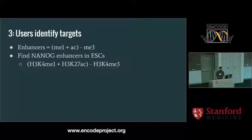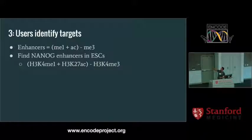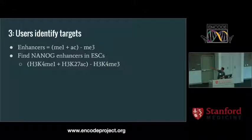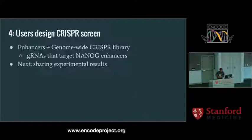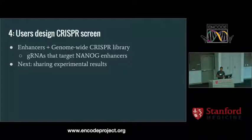For example, say you want to find NANOG enhancers — you want to CRISPR NANOG enhancers in embryonic stem cells. You need two activating chromatin marks: a monomethylation and an acetylation. The plus indicates genomic interval intersection and the minus is subtraction, so we're looking for areas that have monomethylation and acetylation but no trimethylation. Using this friendly user interface, you can now find enhancer targets for NANOG. You then take those NANOG targets and intersect them with the genome-wide CRISPR library to get guide RNAs that target your enhancers of interest.